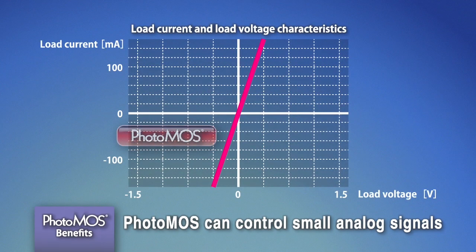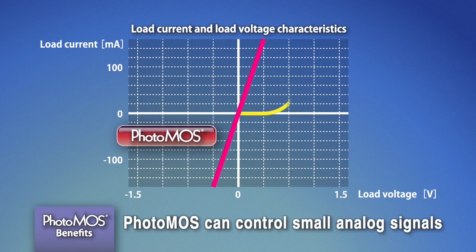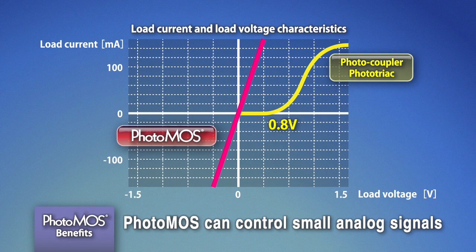A PhotoMOS can control a small analog signal. TRIACs and photocouplers or solid-state relays cannot control signals of less than a few hundred millivolts.